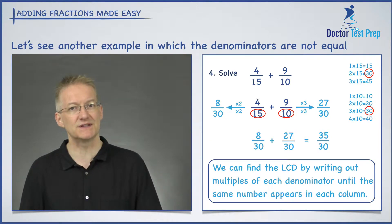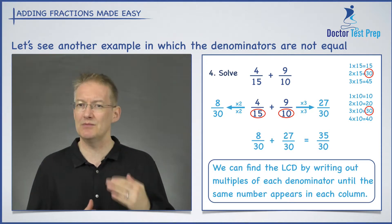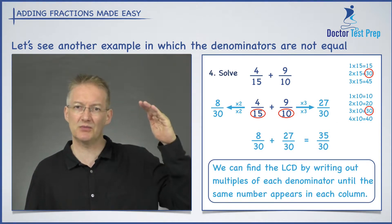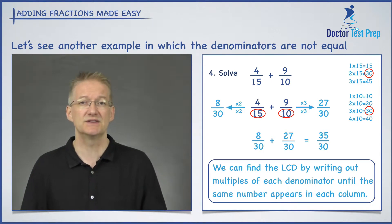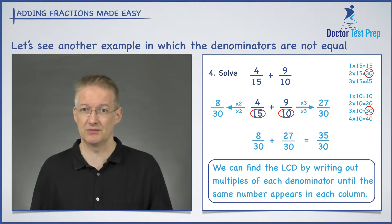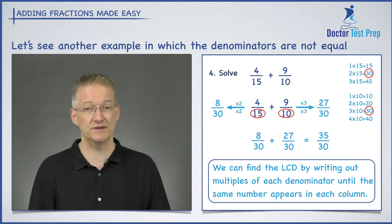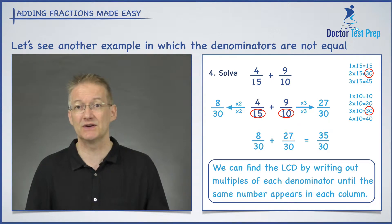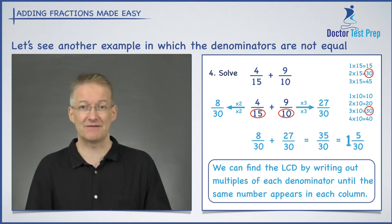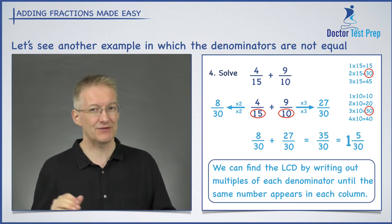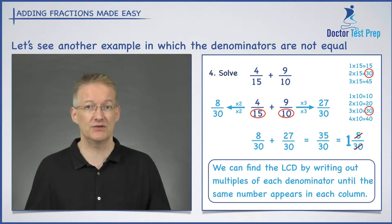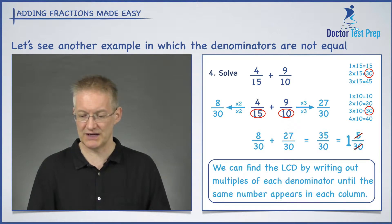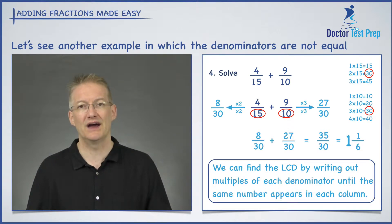Now, 35 over 30 is an improper fraction. Remember, improper fractions have numbers on the top which are bigger than numbers on the bottom. So, 35 is bigger than 30. What I can do here is convert it into a mixed number. How many times does 30 go into 35? It goes once, and I have 5 left over, so I get 1 and 5 thirtieths. Now, 5 thirtieths can also be reduced: 5 into 5 goes once, 5 into 30 goes 6. So that changes into 1 and 1 sixth.